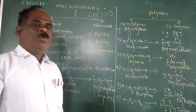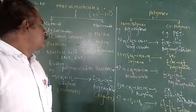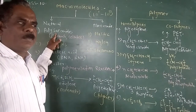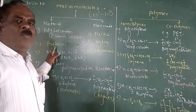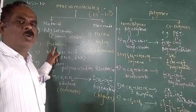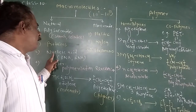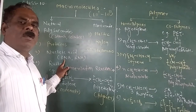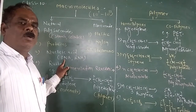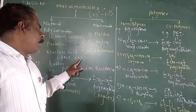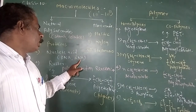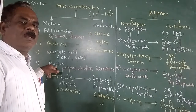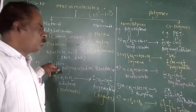Remember, another table is given in your books. In polysaccharides, glucose is the monomer. In proteins, alpha amino acid is the monomer or single unit. Nucleic acid contains DNA and RNA — for DNA, deoxyribonucleotide phosphate is the monomer, and for RNA, ribonucleotide phosphate is the monomer. In rubber, isoprene is the monomer. Such a table is given in your books.